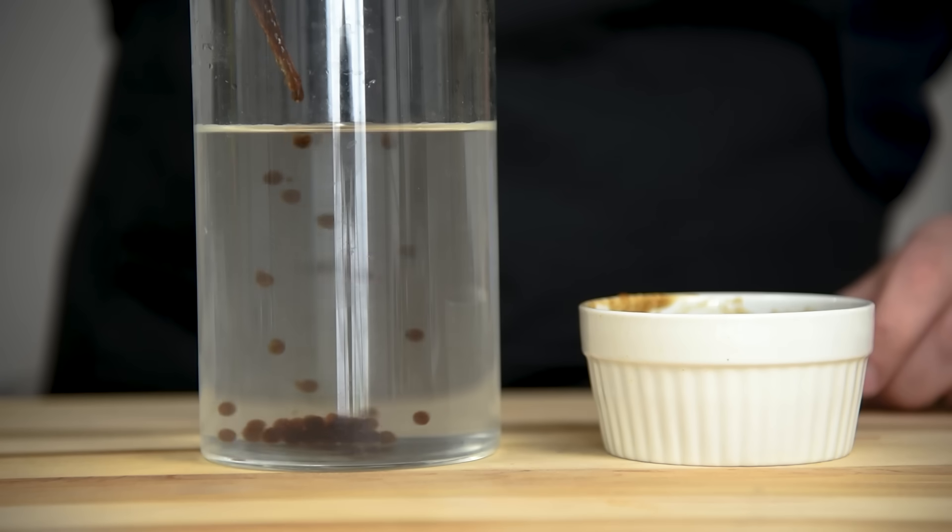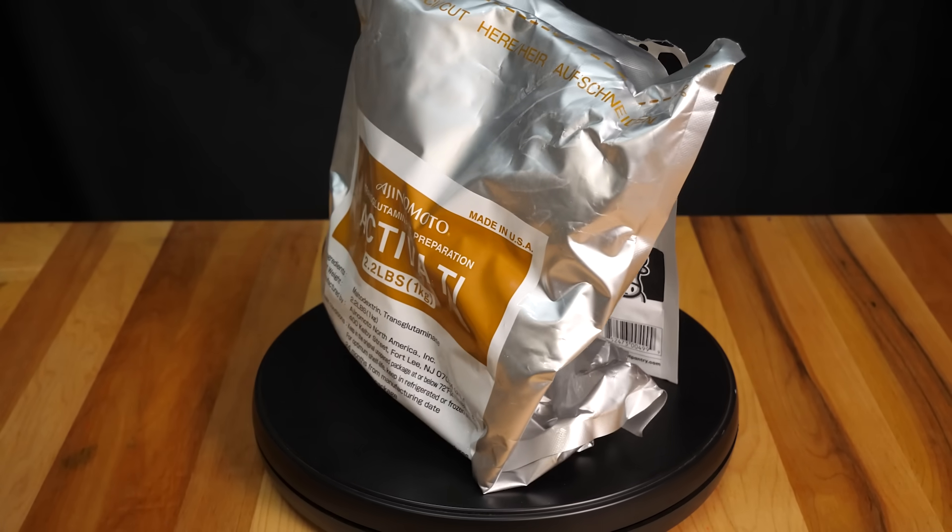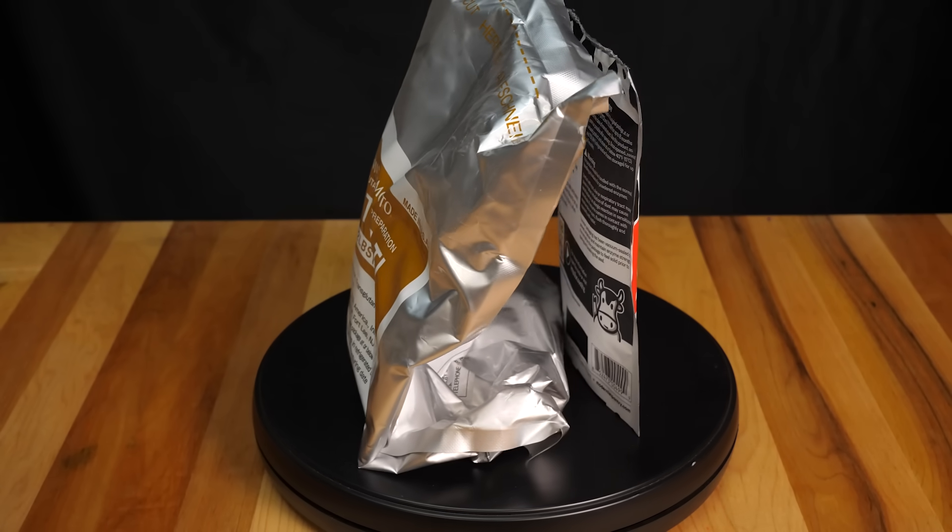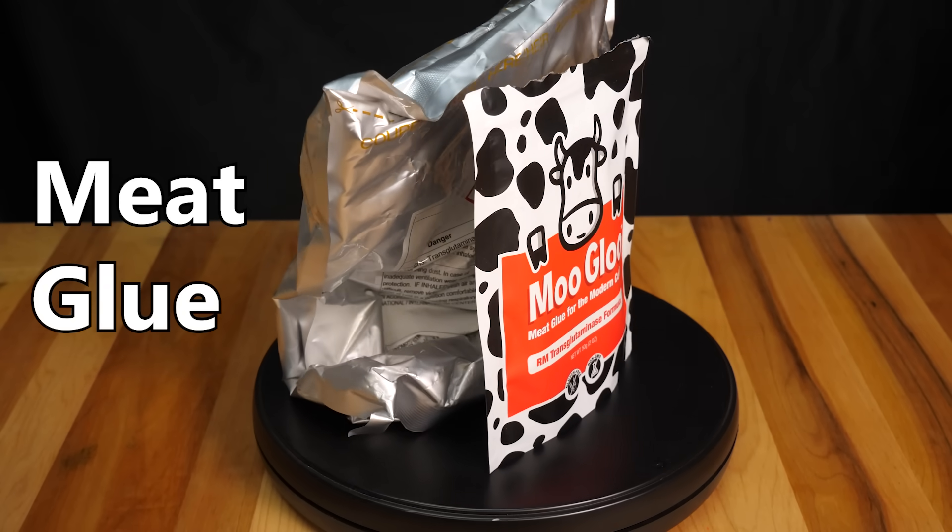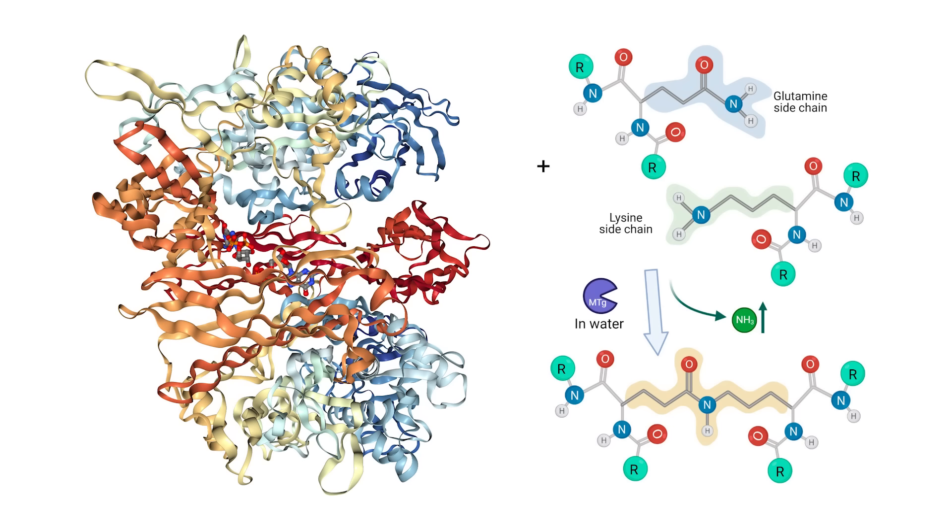Well, one way we could try and do this would be to take some tricks from the molecular gastronomy crowd. In a now very old video on the channel, we explore the use of an enzyme called transglutaminase that we can try here. Its colloquial name is meat glue, but it's not really glue per se, it's not sticky.